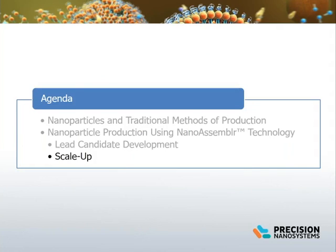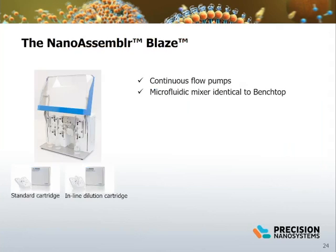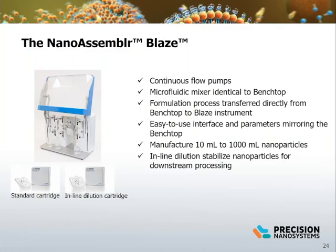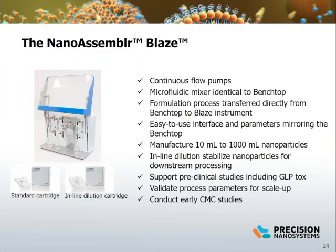With a robust formulation and manufacturing process established, the next step towards clinical manufacturing is scaling up. The NanoAssembler platform makes the scale-up process relatively straightforward with direct transfer of manufacturing processes from the bench top to the Blaze instrument and scale-up system. The NanoAssembler Blaze uses a continuous flow pumping system and the microfluidic mixing architecture is identical to the NanoAssembler bench top. Formulation and manufacturing process parameters can be transferred directly using a software interface similar to the bench top, producing volumes up to one liter. Inline dilution is available as an option to stabilize the nanoparticles for downstream processing.